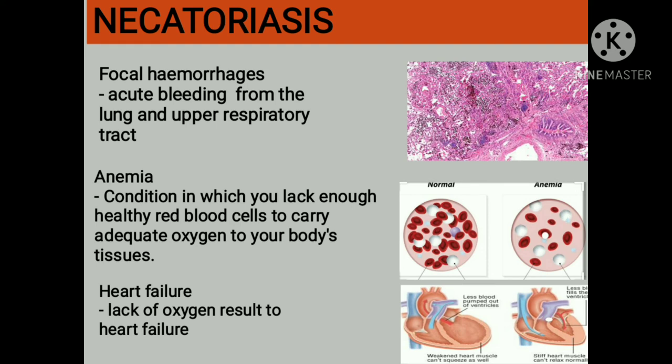Once worms reach the small intestines, the intestinal phase disease occurs when they attach the mucosa by ingesting a tissue plug into their mouths and feeding on blood. Necator americanus can consume 0.03 ml of blood per day. Blood loss from the host may result in a profound iron deficiency anemia and hypoproteinemia.